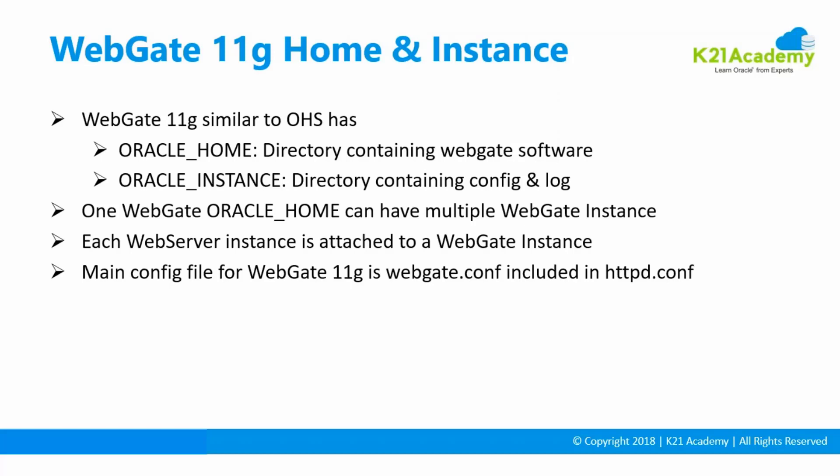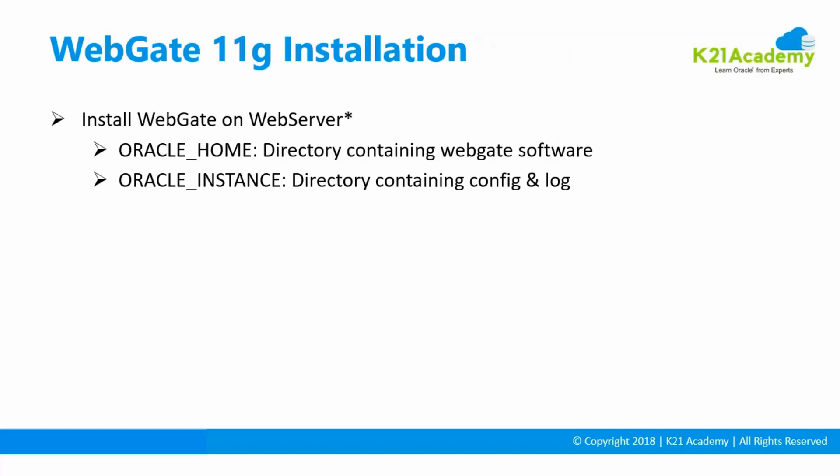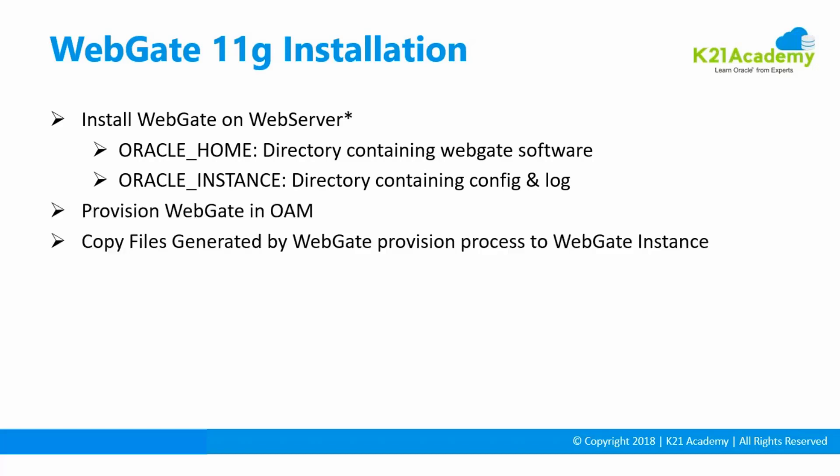This is about the main configuration, which we'll also see when we install and configure. To install the WebGate, you go to the directory where you downloaded the WebGate software, run some configurations, install the software, and create the instance. Once you've created an instance on the OAM side and installed the WebGate software on the HTTP server, there is a configure command you run that will connect the WebGate on the HTTP server with the WebGate on the OAM side.